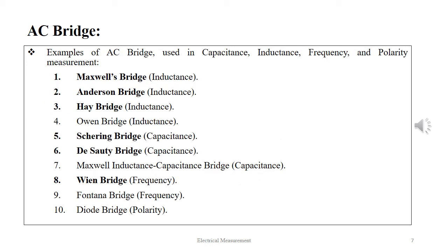The AC bridges come in ten major categories. They are Maxwell bridge, Anderson bridge, and Hay bridge, all used to measure inductance. Schering bridge, De Sauty bridge, and Maxwell inductance-capacitance bridge, all used to measure capacitance. The Wien bridge and Fontana bridge are used to measure frequency, and then we have the diode bridge to measure polarity.